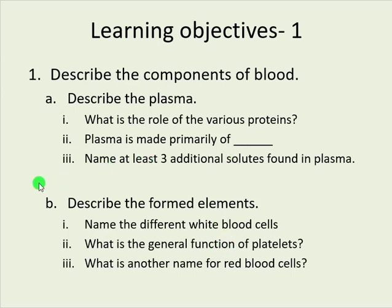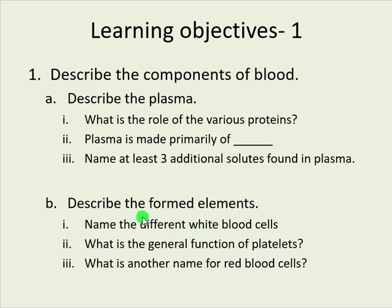You should think of a conceptual separation here. What are the components of blood? Well, there's plasma and there are formed elements. We want to know more about what's up with the plasma and what's up with formed elements. And if we get those down, then we will know the basic makeup of blood.